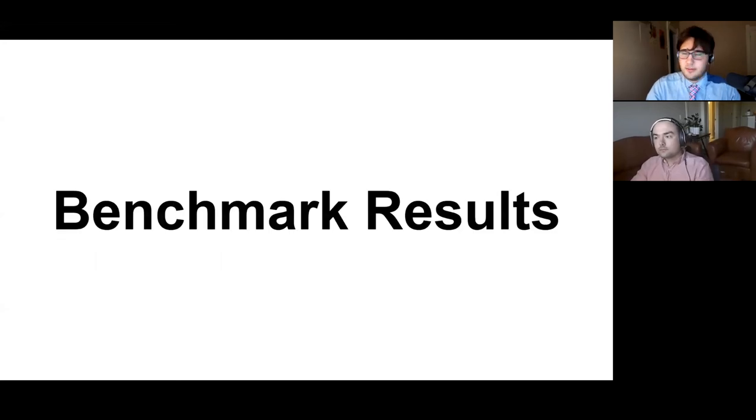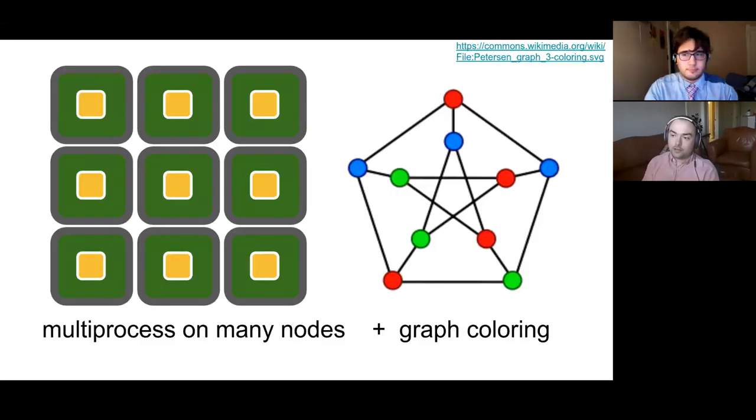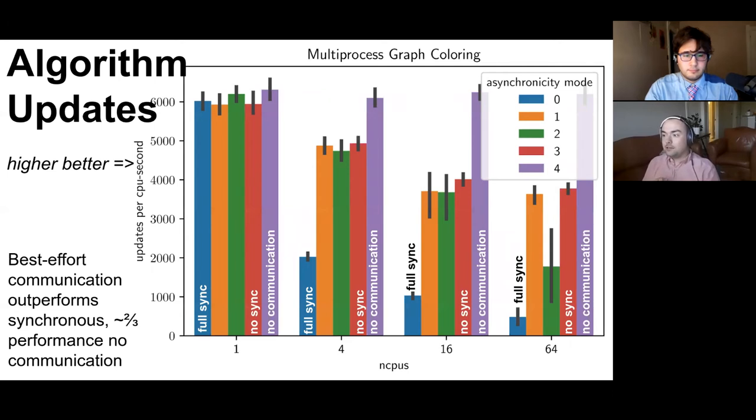Now I'll hand it over to Matthew so he can discuss the results. All right, so we performed these two benchmark problems in both a multi-processing and a multi-threading context. Starting out with the graph coloring problem in the multi-processing context, we saw a significant improvement of the number of updates that could be calculated per second for best effort communication run modes one, two, and three compared to the fully synchronous perfect communication model.